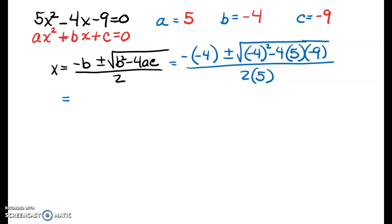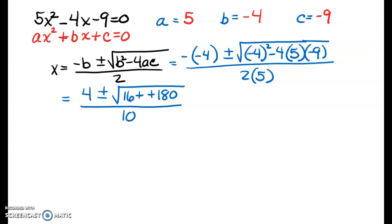Now we need to evaluate. A double negative gives us a positive, so negative negative 4 is positive 4. That is why it's really important to use parentheses when you substitute — otherwise you'll forget the double negative. Negative 4 times negative 4 is positive 16, and 4 times 5 is 20. Then 20 times negative 9 is negative 180, so we again have a double negative, which turns this into a positive. All over 2 times 5 is 10.